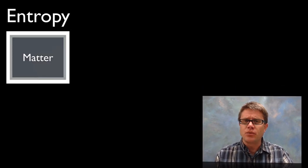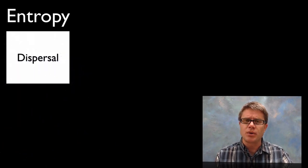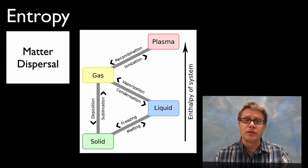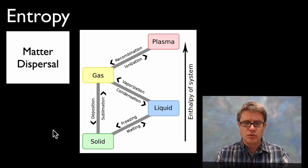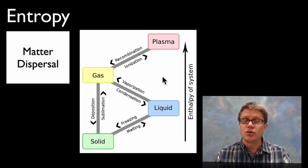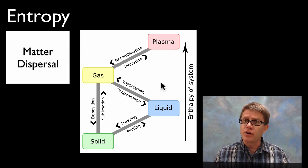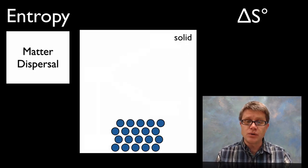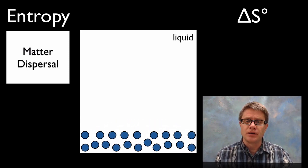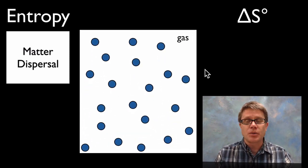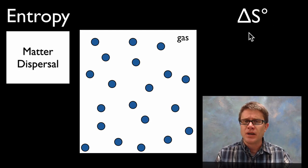And so again to define entropy what is it? It's simply matter dispersal or matter spreading apart. And so let me give you an example of a certain type of matter dispersal. It would simply be phase change. So as we move from a solid to a liquid to a gas to a plasma that matter is moving farther apart. And so as it's doing that, what we're doing as we move from a solid to a liquid to a gas is that matter is spreading apart. And as it does we're getting a delta S which is going to be a positive value.